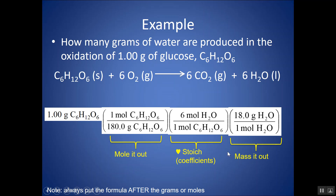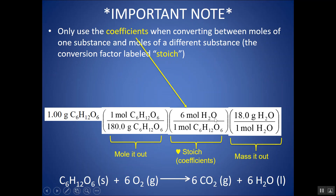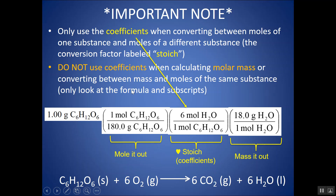Multiplying everything on top and dividing by the bottom, I get 0.6 grams of H₂O. You might need three steps: mole it out, then do stoichiometry, then turn it back into mass. Use a different molar mass for each substance. Only use the coefficients when converting between moles of one substance and moles of a different substance — that's the stoichiometry conversion factor. Do not use coefficients when calculating molar mass or converting between mass and moles of the same substance; for those steps, only look at the formula and subscripts.